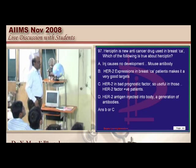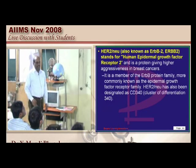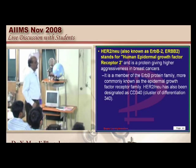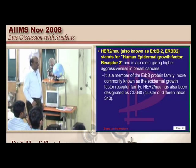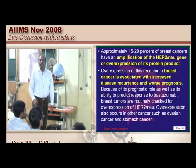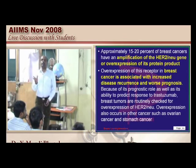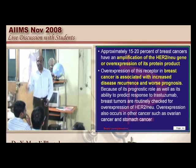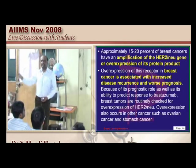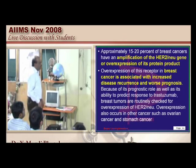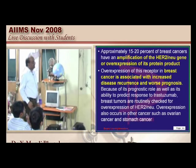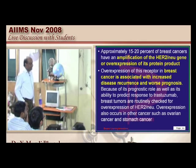Herceptin is a monoclonal antibody against the human epidermal growth factor receptor 2 (HER2), which is implicated in breast cancer. Its overexpression is responsible for the disease. Not all breast cancers express HER2 — only aggressive varieties resistant to chemotherapy express HER2. HER2 expression makes it a very good target but also carries a bad prognosis.